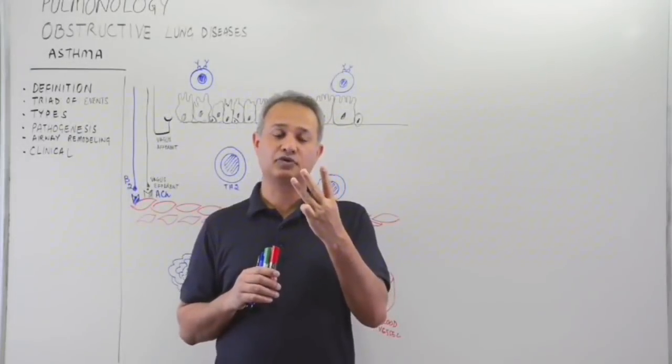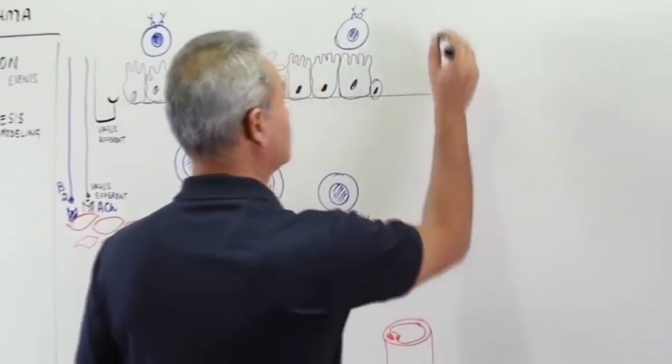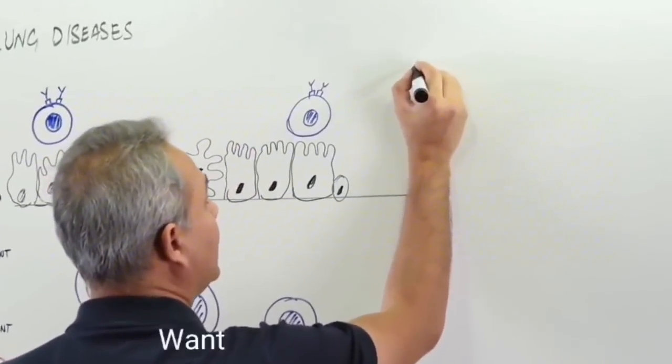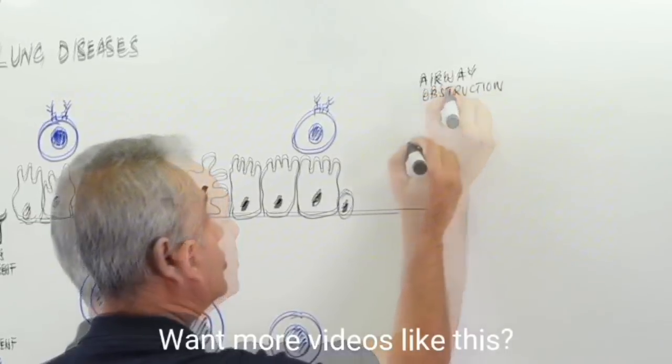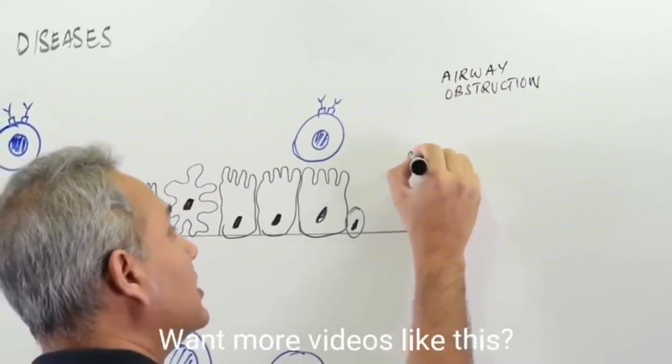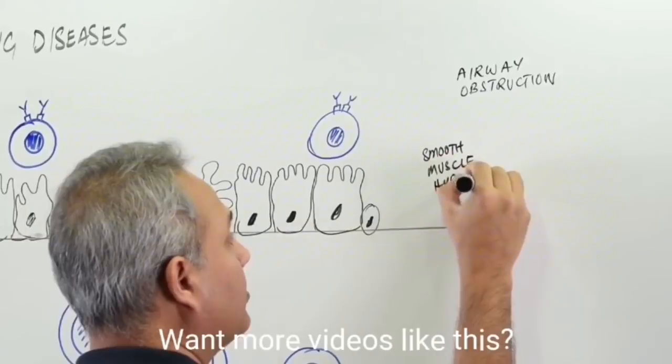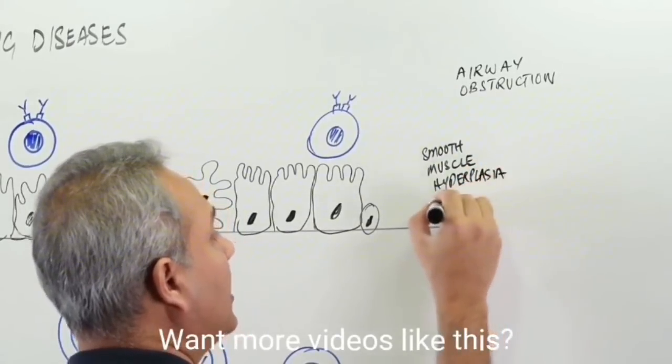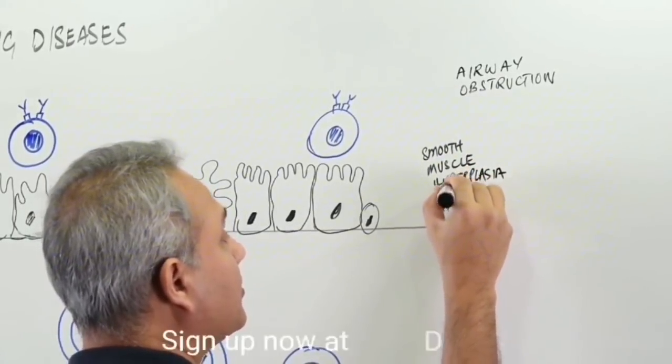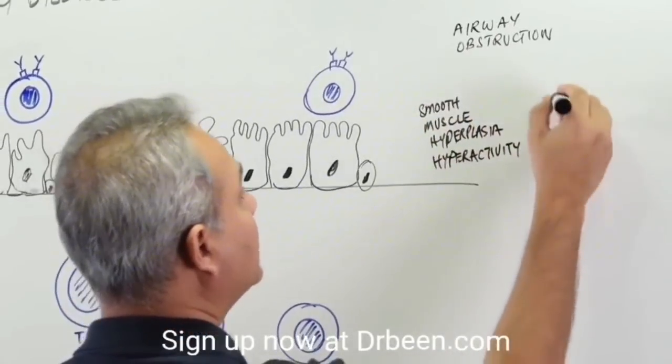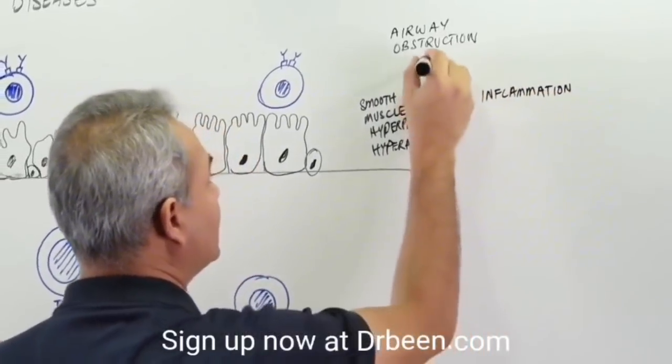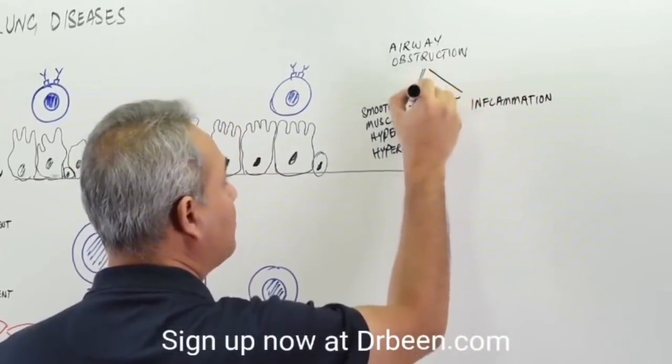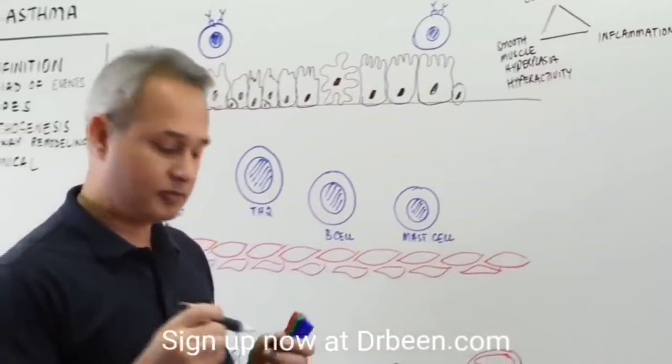It has three primary problems that you should see. What are those three issues? Number one, you have airway obstruction. Number two, you have smooth muscle hyperplasia with hyperactivity, and finally the patient has inflammation. These are the three basic pillars, three basic problems.